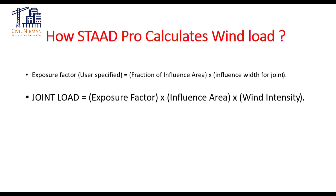The built-in wind load generation feature allows the user to specify the exact building panels exposed to the wind. This user control provides a more accurate distribution of wind forces, especially when different vertical sections of the building are exposed to the wind in different directions. Additionally, the method for identifying the shape of the panels and calculating the load on the panel corners has been improved in STAAD.